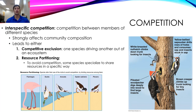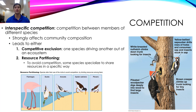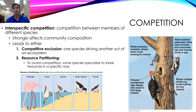Things get different when we talk about interspecific competition — competition between members of two different species. Intra (T-R-A) means same species; inter (T-E-R) means different species. Interspecific competition strongly affects the community composition of a given ecosystem. When two different species compete, it can lead to competitive exclusion, where one species completely out-competes the other and kicks it out of the entire ecosystem.